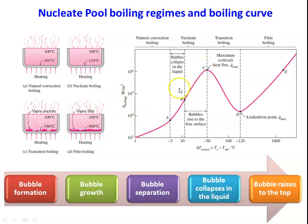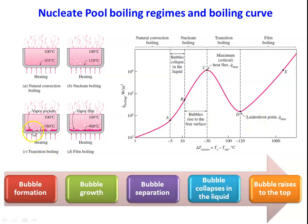Further heating causes bubbles to join together, forming vapour pockets. Because of these vapour pockets, the heat transfer starts decreasing. The vapour pocket offers resistance to heat transfer between the metal surface and the liquid, so the heat transfer coefficient and amount of heat transfer decrease. This continues up to point D — this is the transition boiling region.